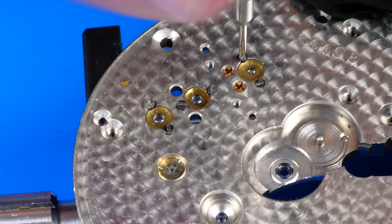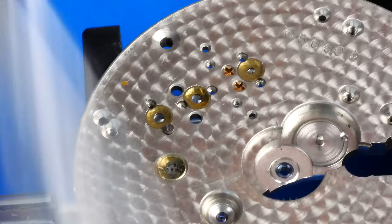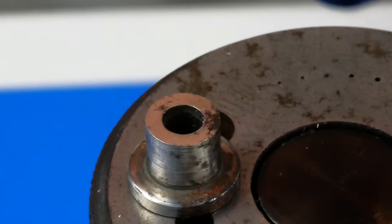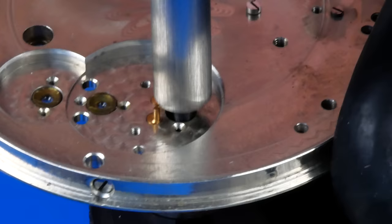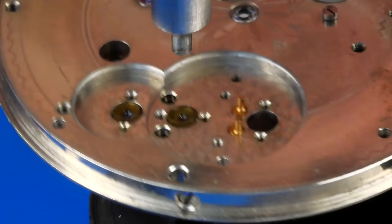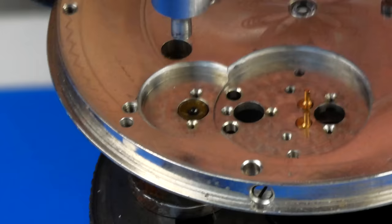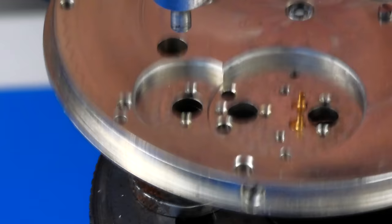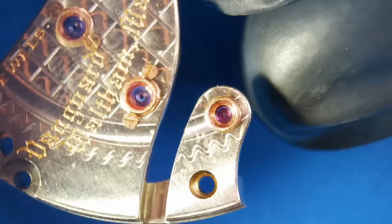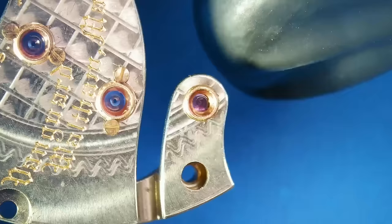The lower balance, escape, and pallet jewels are all capped. As with any capped jewels, they're all separated for cleaning. This way, the fluid has a better chance of reaching all the surfaces of the jewels. Don't let the magic of editing fool you. I am taking great care to keep track of which jewels went where, as the holes are of different sizes as designed for their respective pivots.